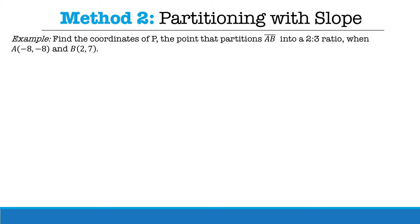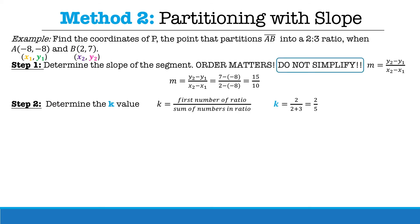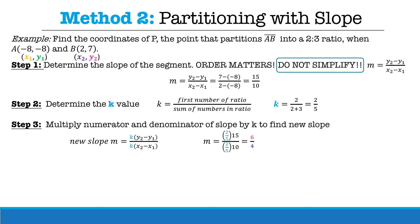Let's now look at method two — partitioning with slope. Using the exact same problem, we first find the slope of the segment. Do not simplify this slope. To find slope, take y2 minus y1 divided by x2 minus x1, which gives us 15 divided by 10. Next, determine the k value by taking the first number in the ratio and dividing it by the sum of the numbers in the ratio. Here k equals two divided by five. We then multiply k by each number in the slope: two-fifths times 15 gives six, and two-fifths times 10 gives four.